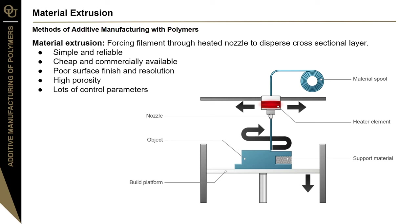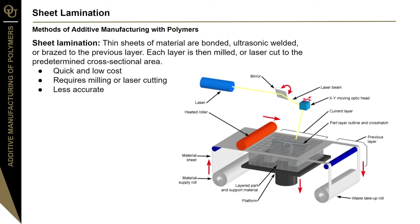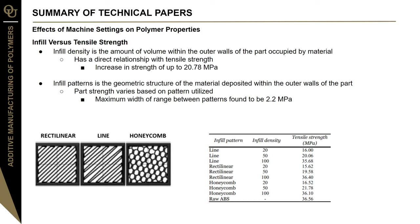Sheet lamination is an additive manufacturing process where thin sheets of material are bonded, ultrasonically welded, or brazed to adhere to the previous layer. Each layer is then milled or laser cut to the predetermined cross-sectional area. This is a quick and low-cost manufacturing method, but it requires milling or laser cutting each layer. The major drawback is that it's not highly accurate and material is often wasted. At this point, we have a knowledge of what polymer materials are used in additive manufacturing and the processes that take them from a material to a final part.